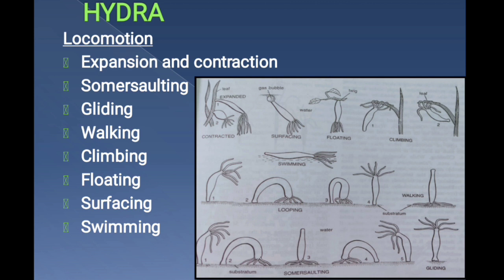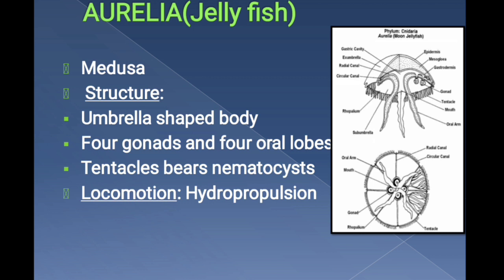Hydra shows the following types of movement: expansion and contraction, somersaulting, gliding, walking, climbing, floating, surfacing, and swimming. These are the various movements by which Hydra locomotes.